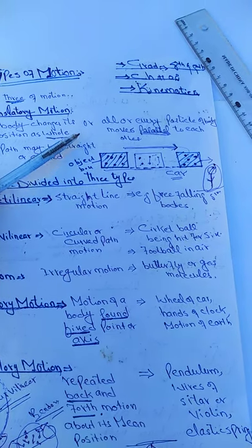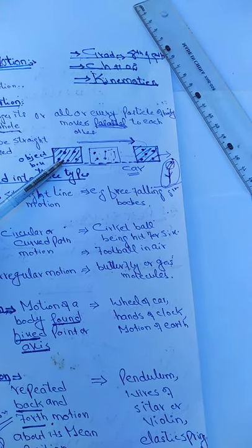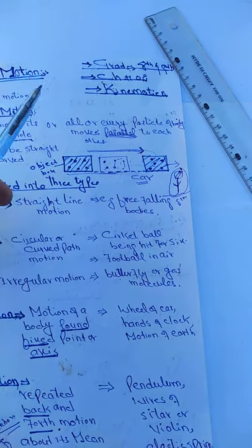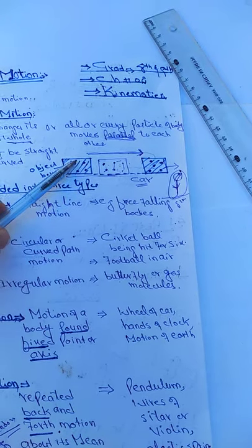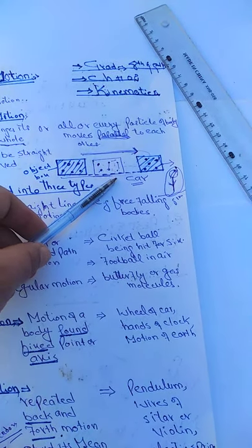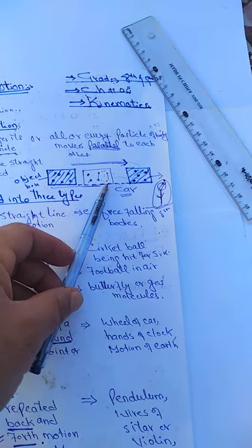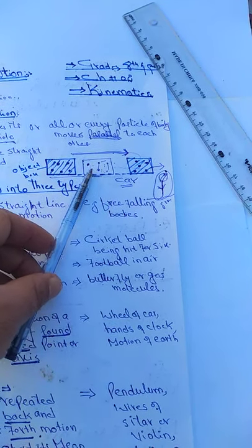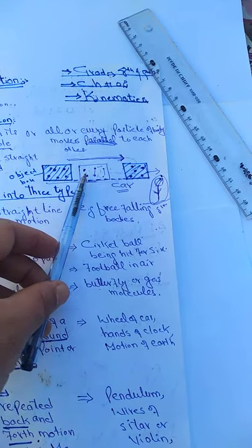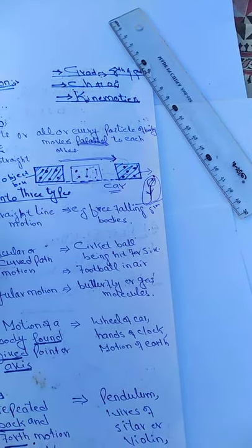For example, if we take a box or any object, a box is made of different particles combined together. If we apply force on this box, it starts motion. After a certain time, if you look, each particle moves parallel to each other. It is not like one particle moves forward and another moves backward - each particle moves parallel to each other. This type of motion we call translatory motion.